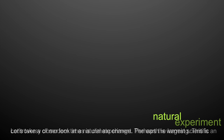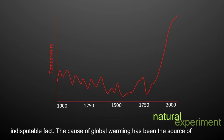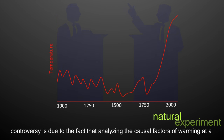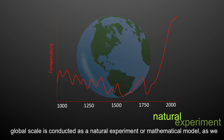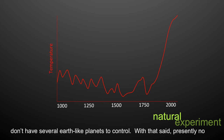Perhaps the largest scientific controversy of modern times is climate change. The earth is warming — this is an indisputable fact. The cause of global warming has been the source of contentious debate among scientists and politicians for decades. The root of this controversy is due to the fact that analyzing the causal factors of warming at a global scale is conducted as a natural experiment or mathematical model, as we don't have several replicate earth-like planets to control.